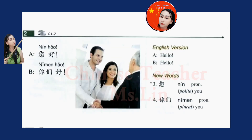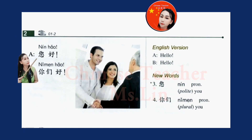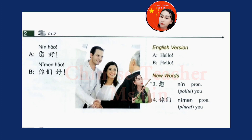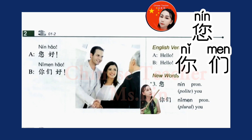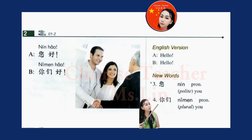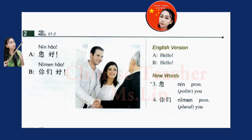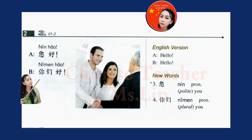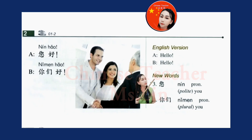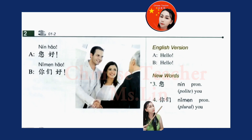课文二 Text two: 您好, 你们好. New words: 你们. 课文二 Text two: 您好, 你们好. New words. 你们.